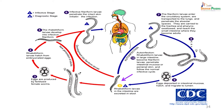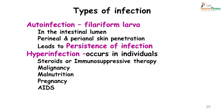When this kind of internal reinfection occurs, it is referred to as auto-infection. Hyperinfection occurs in individuals who are usually on steroids or immunosuppressive therapy due to malignancy; it can also occur in malnourished or pregnant patients, and in patients with AIDS, which is now one of the main causes of immunosuppression.